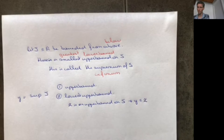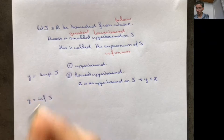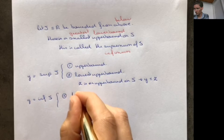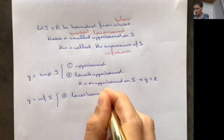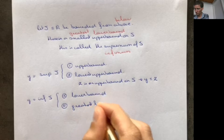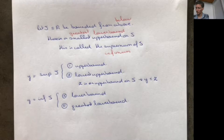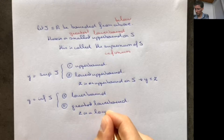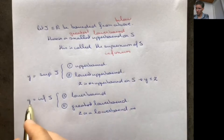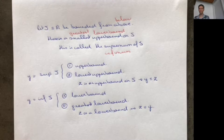Y is an upper bound, but it's less than or equal to any other upper bound. Similarly, if Y is the infimum, it has to satisfy two conditions: it's a lower bound, and it's the greatest lower bound. So if Z is a lower bound and Y is the infimum, then you know that Z is smaller or equal to Y.